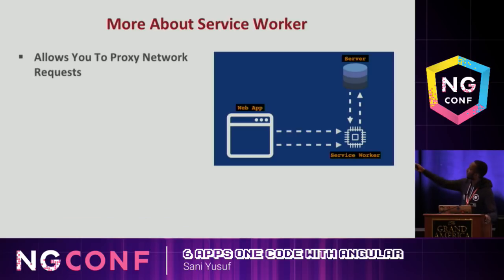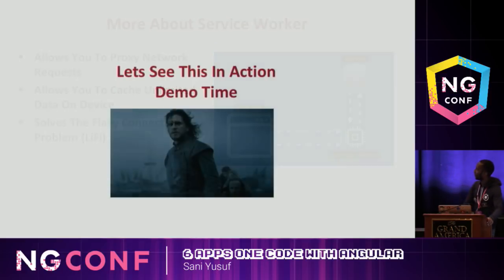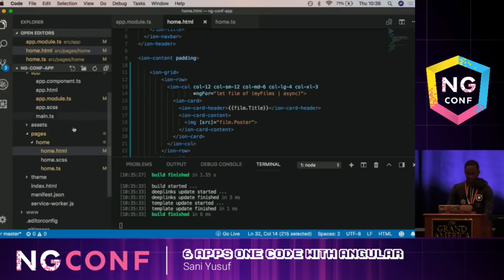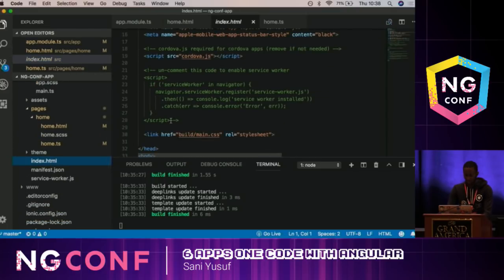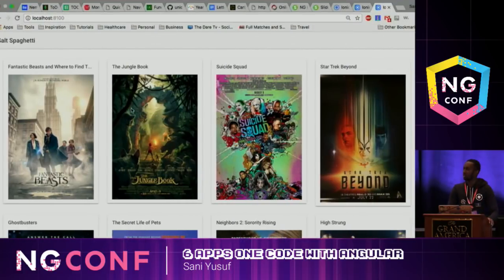So how does the service worker work? It's a proxy that sits between your app and the server and it proxies requests and responses. It allows you to cache unlimited data and supports push notifications. And Li-Fi is when your phone has two bars and makes you believe you have service - but you don't. Your phone is confused - it's lying to you. Let's see the demo. Luckily this is going to be the easiest demo because Ionic by default actually supports service workers. We just go to the index.html and uncomment a bunch of lines - that's it.